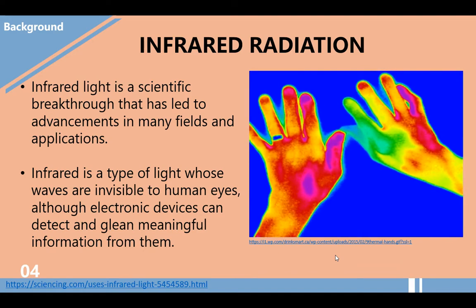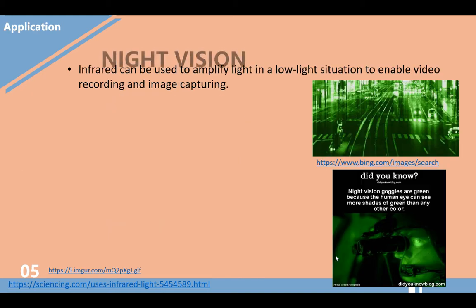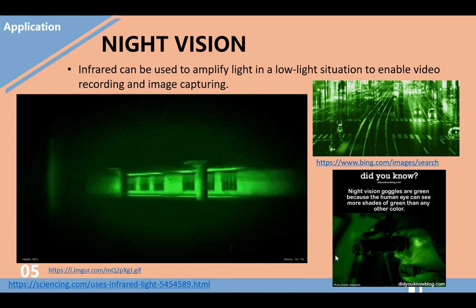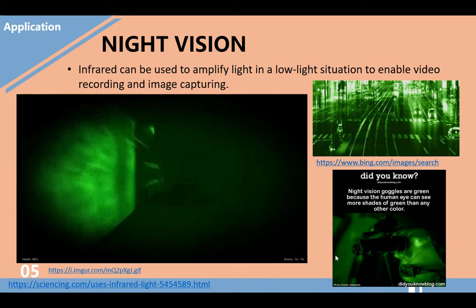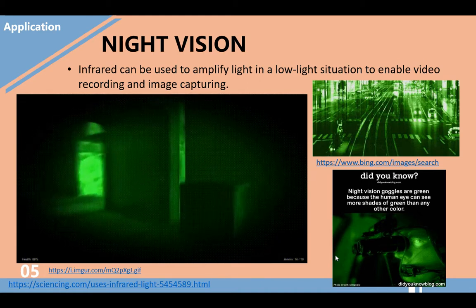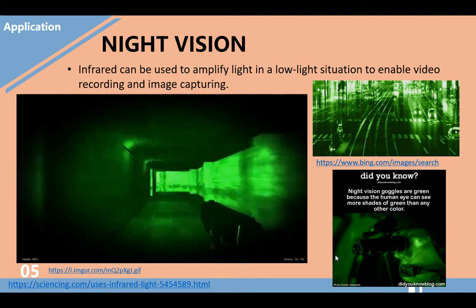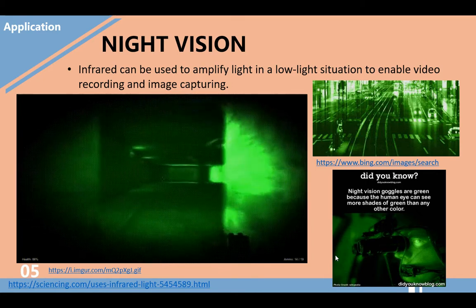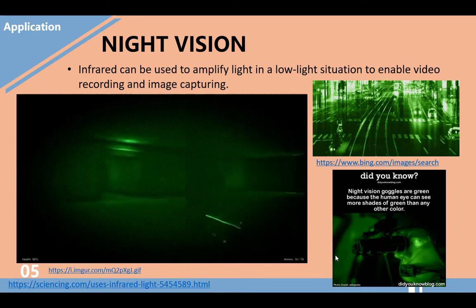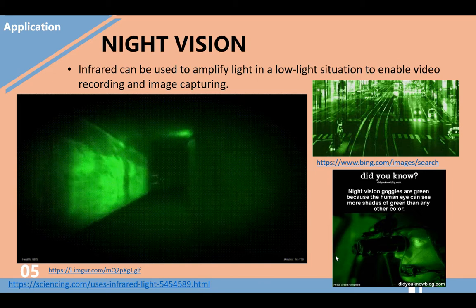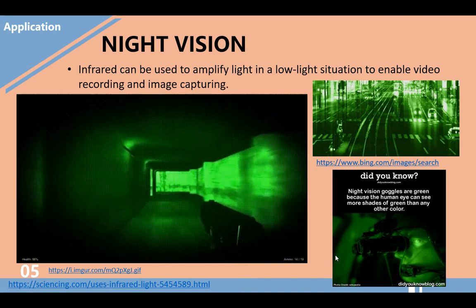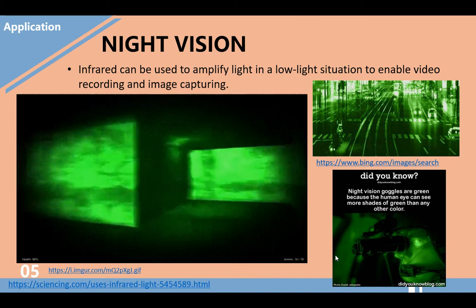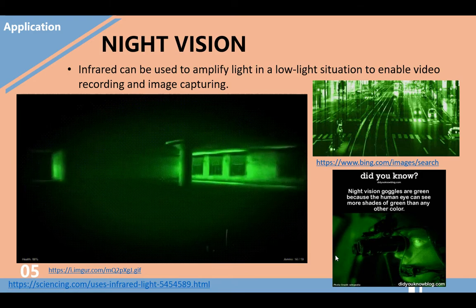Now let's discuss the applications of infrared radiation. First is night vision. Infrared can be used to amplify light in a low-light situation to enable video recording and image capturing. Some channel or movie producers use this technology to see what is happening in the dark. Trivia: night vision goggles are green because the human eye can see more shades of green than any other color.